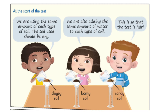Putting the same amount of each type of soil and the same amount of water to each type of soil — this is to make the test fair. So again, the soil is a variable, and when we say the same amount of soil it means keeping the test fair. The second variable was the same amount of water.